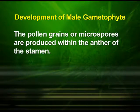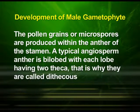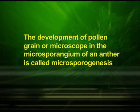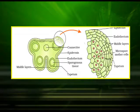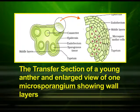Now let us see the development of male gametophyte. The pollen grains or microspores are produced within the anther of the stamen. A typical angiosperm anther is bilobed with each lobe having two theca — that is why they are called dithecous. The development of pollen grain or microspore in the microsporangium of an anther is called microsporogenesis. A typical anther consists of four microsporangia. In this diagram, we can see the transverse section of a young anther and an enlarged view of one microsporangium showing wall layers.